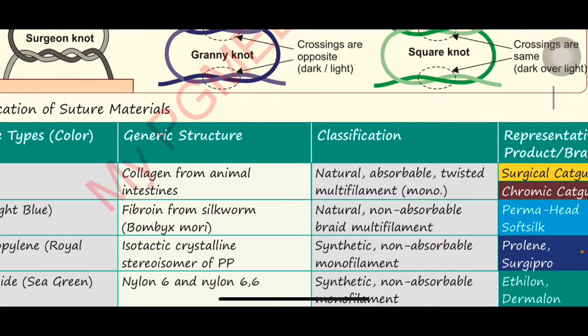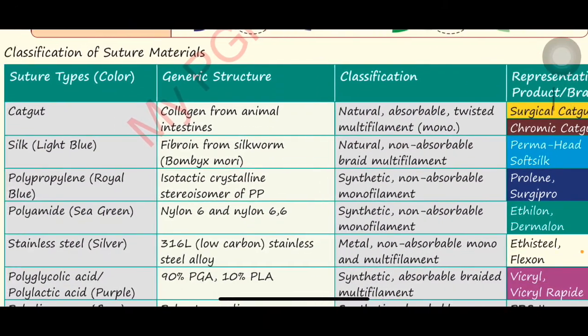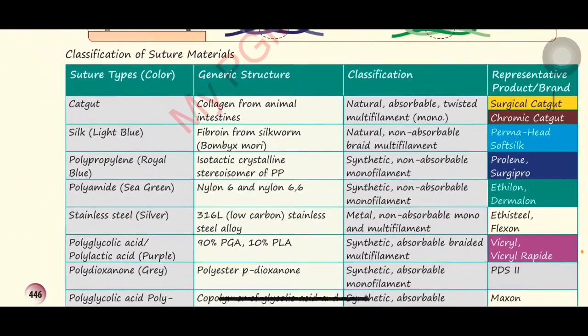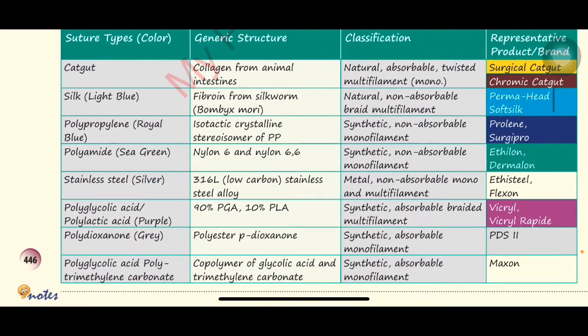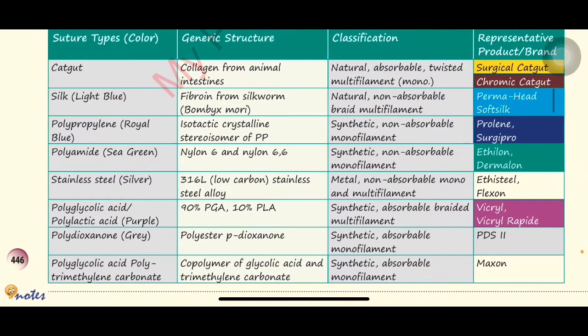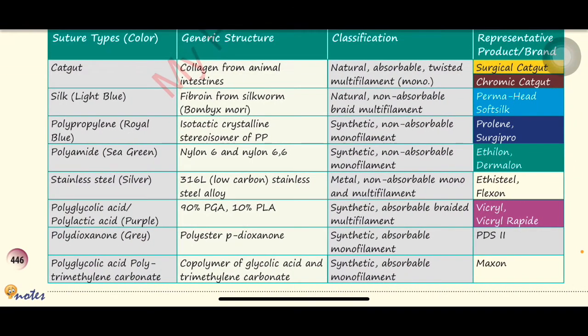Next, coming to the suture materials. Catgut is made up of collagen from animal intestines. It is natural, absorbable, twisted, and available as multifilament and monofilament. Representative products include plain surgical catgut and chromic catgut.